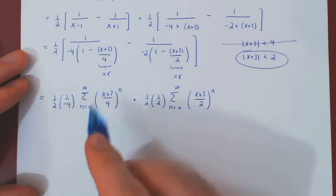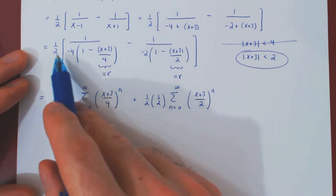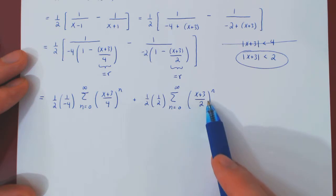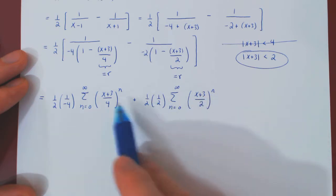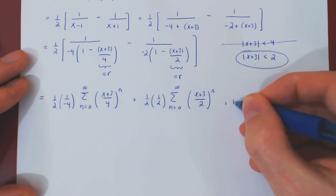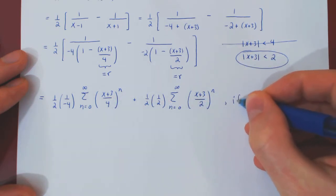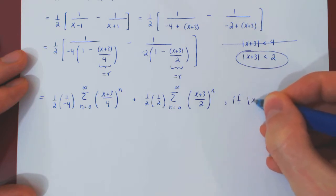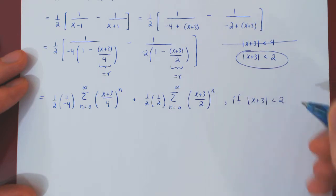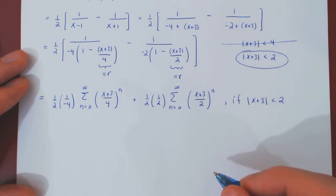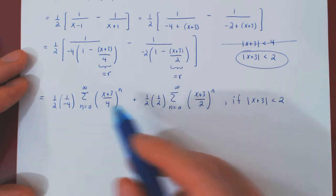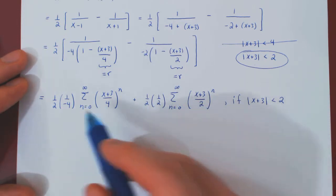The equality between this rational function and these two power series is only valid when the absolute value of (x plus 3) is strictly less than 2. Let's simplify by combining both Taylor series together.